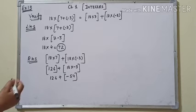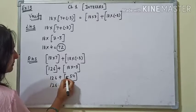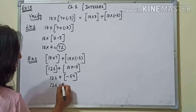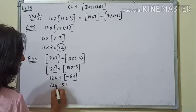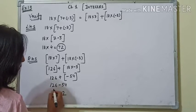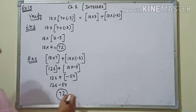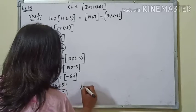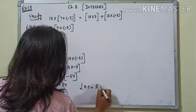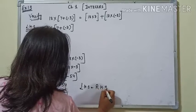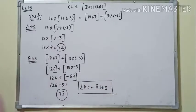अब bracket को open करते हैं: 126 + (-54) = 126 minus 54. 6 में से 4 गए 2, 5 में से 5 गए 7, तो ये भी 72। तो LHS equal to RHS। Hence verified.